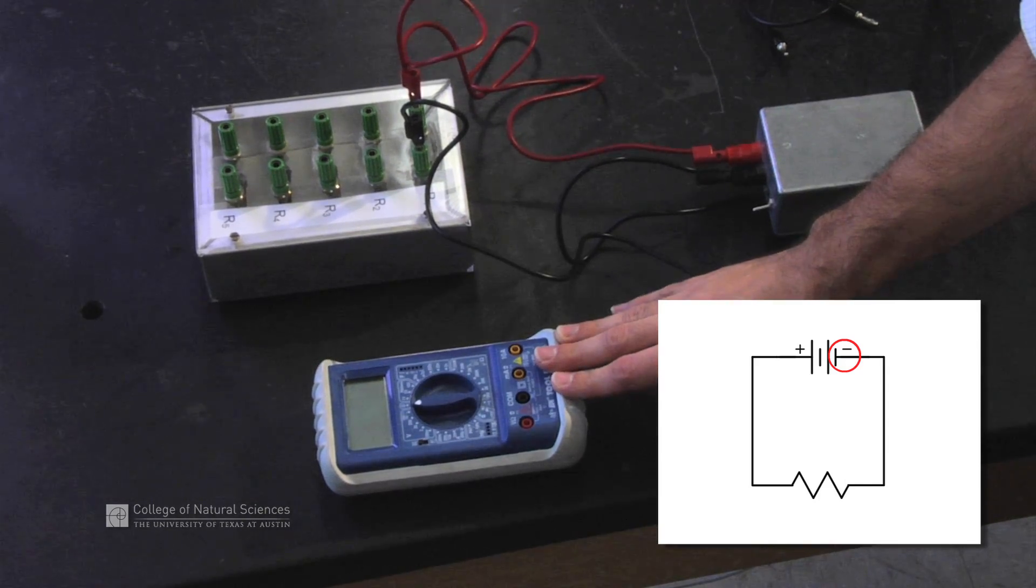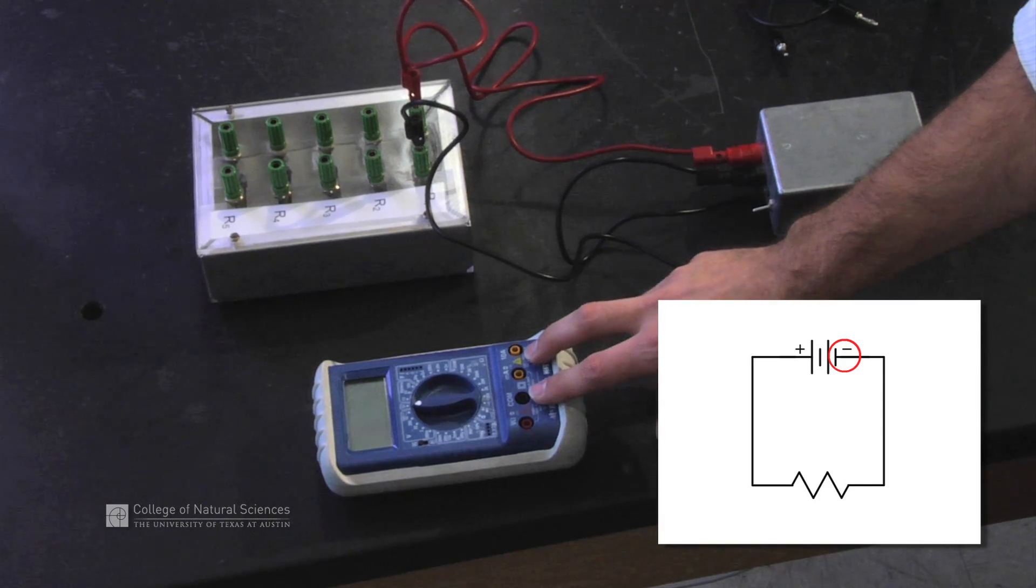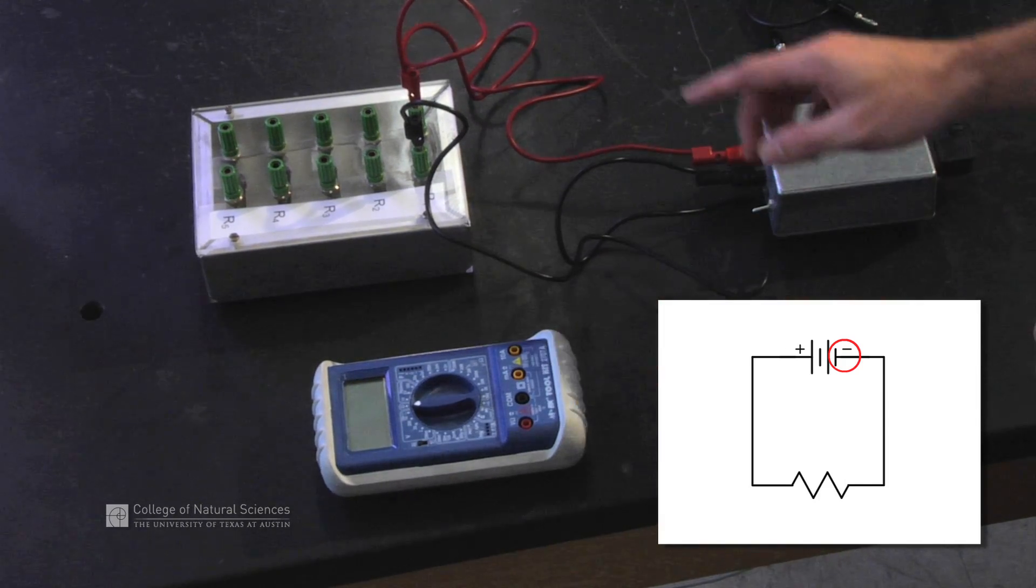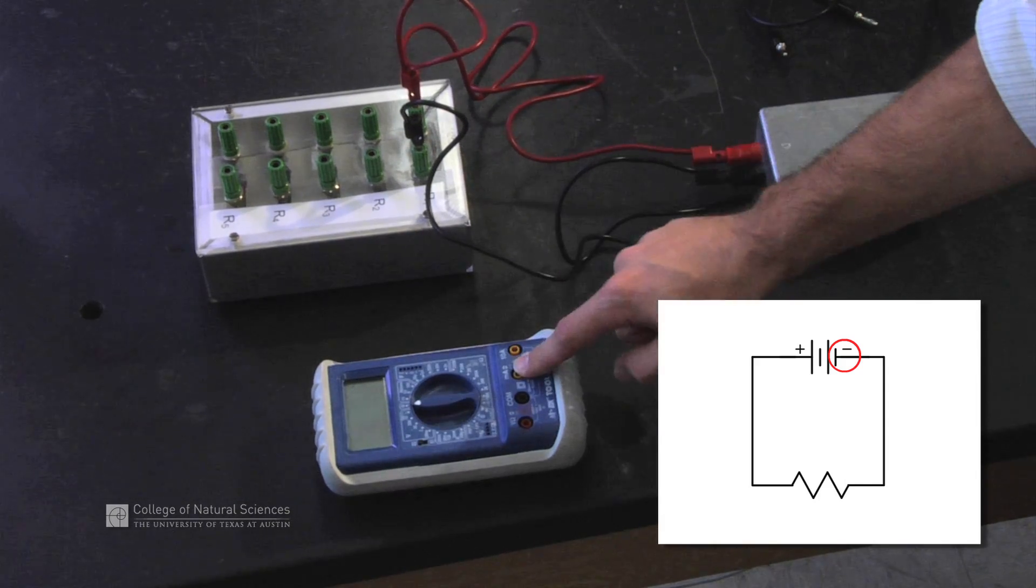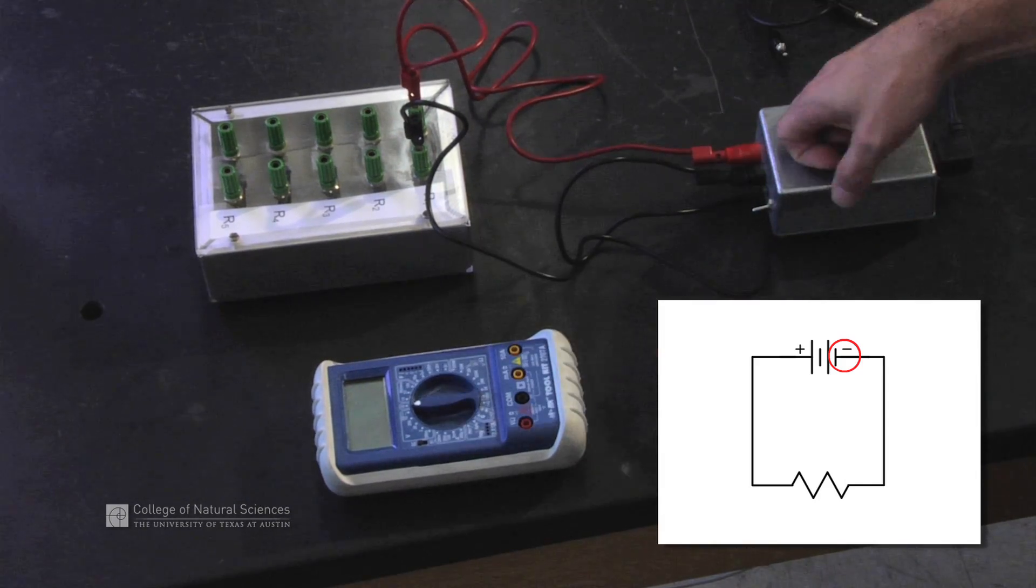In order to hook up our multimeter, you'll notice there are no cords attached to it right now. The reason is we need the current to flow through the wire, to flow directly through the multimeter, and then back to the power supply.